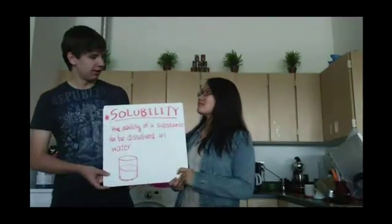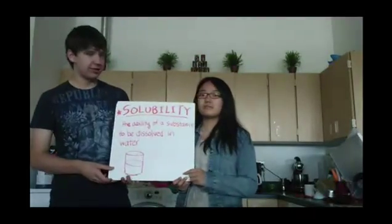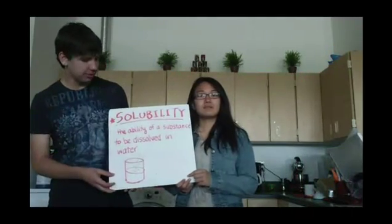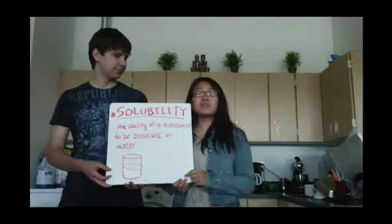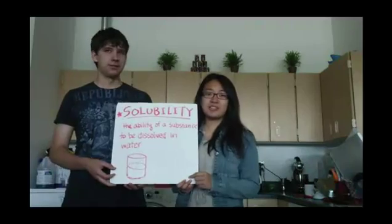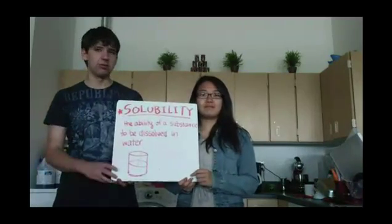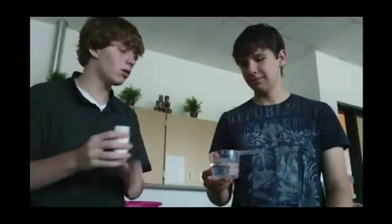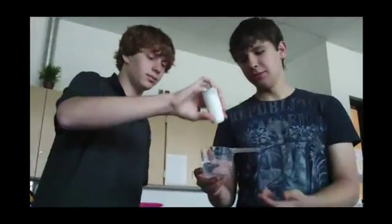Why wasn't the egg dissolving? Well, to understand that, we have to define solubility first. Solubility is the ability of a substance to be dissolved in water. In other words, something that's soluble will break apart when you put it into water. An example of a soluble compound would be salt, or sodium chloride. When you put it in, all of the salt will dissolve into an aqueous solution. That means all parts of the solution are going to be equally homogeneous in how much salt is in the water.